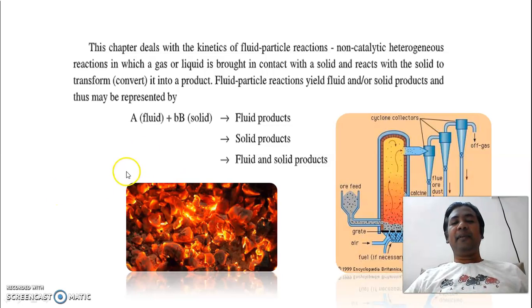So this is a schematic of that kind of reactions. A fluid plus B times B solid. This is a stoichiometric view of any reaction, where A component is a fluid, B component is a solid, and there is a stoichiometric proportion 1 is to B. And it is giving a fluid product or solid product or fluid and solid products. So this may be the variations in fluid-solid reactions, heterogeneous fluid-solid reactions.